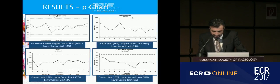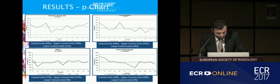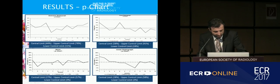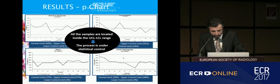In the chest radiograph, we have also the P chart, and we can see the central line is around 58%. For the wrist, we have a central limit of 27%, and in the ankle radiograph, we have a central limit of 28%. All the samples are inside the limits.